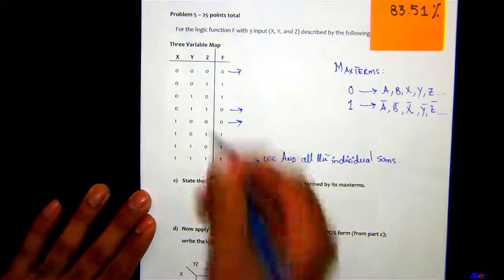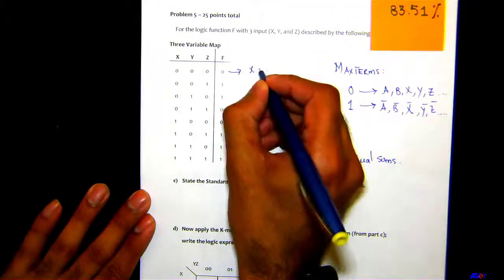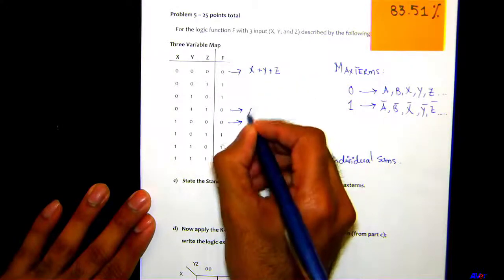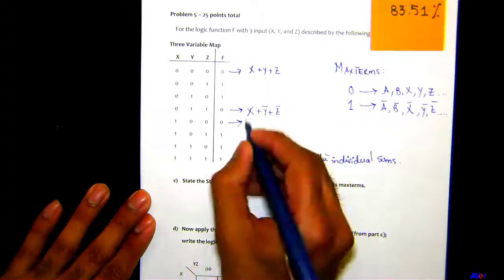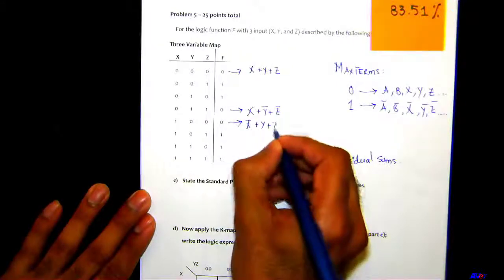So what was the expression here? It would have been X+Y+Z. Here would have been X+Y̅+Z̅, and here would have been X̅+Y+Z.